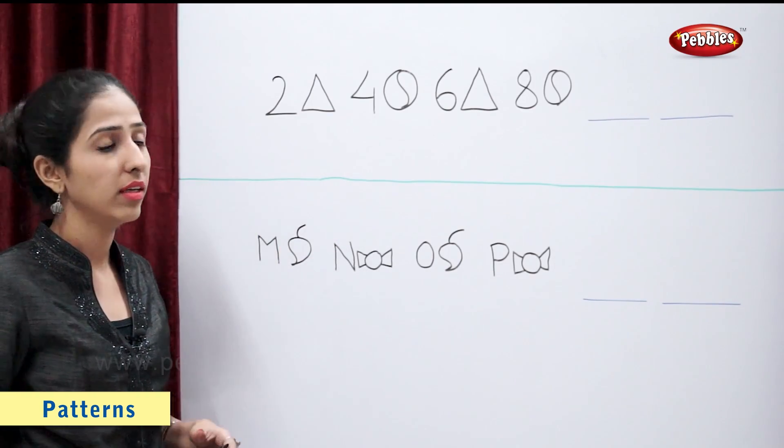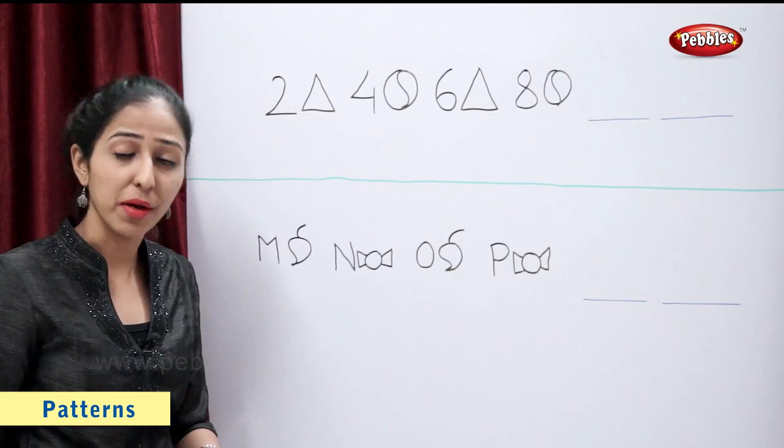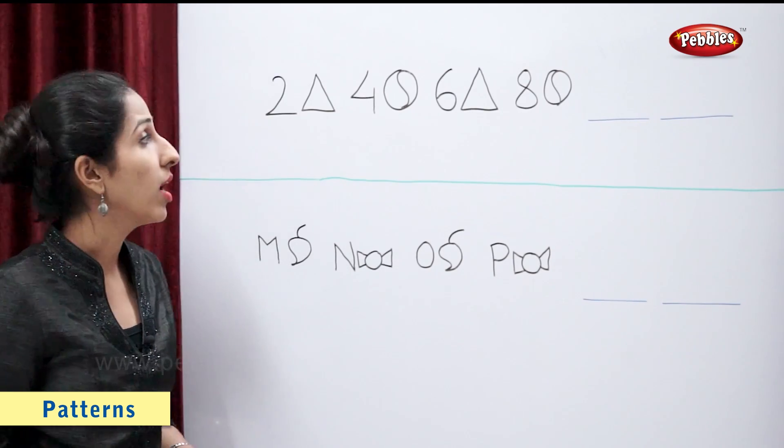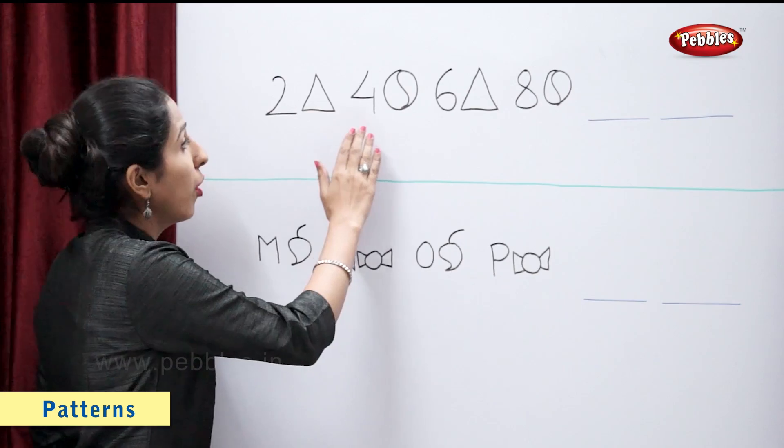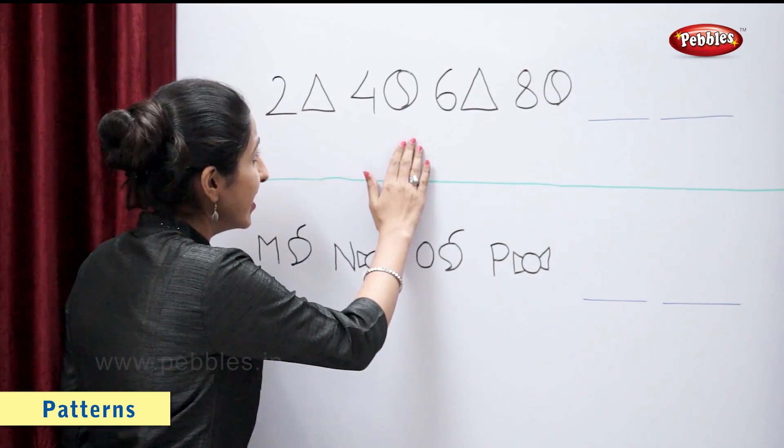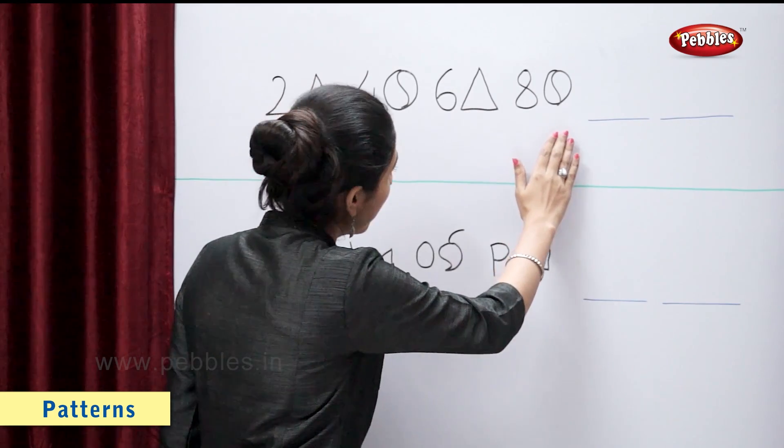Let's solve these examples. The first example is a combination of numbers and shapes. We have 2 triangle, 4 ball, 6 triangle, 8 ball.